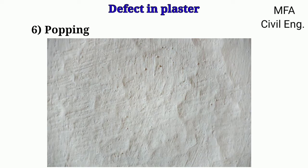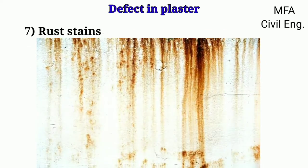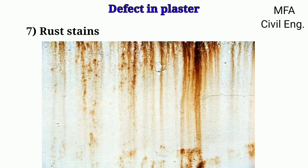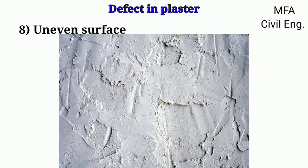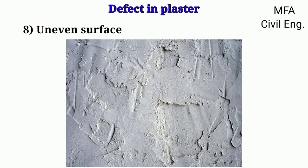Popping is the formation of a conical hole in the plaster surface due to the presence of some particles which expand on setting. Rust stains are sometimes formed when plaster is applied on a metal lathe. The uneven surface is obtained purely due to poor workmanship.